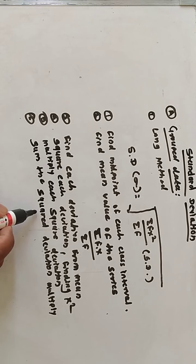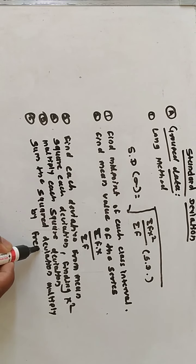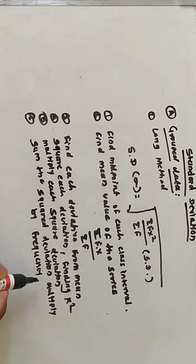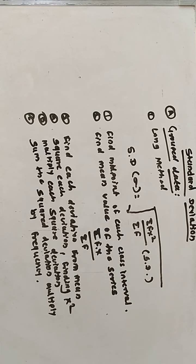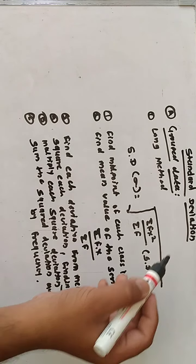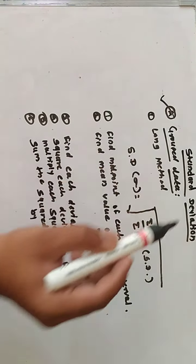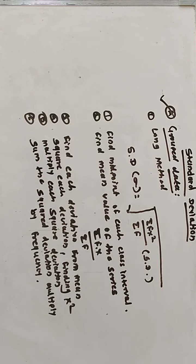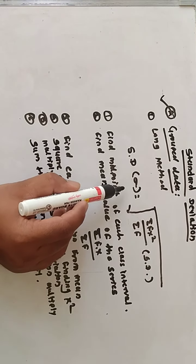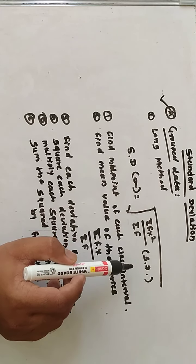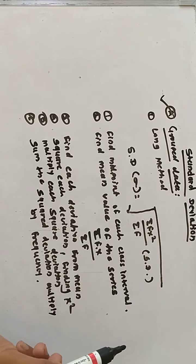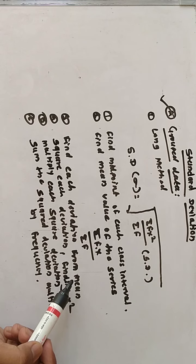In standard deviation we have two types of data: first grouped data and second ungroup data. In grouped data, two methods are given. The first is the long method, and the formula for the long method is standard deviation equal to square root of summation of f·x² divided by summation of f.